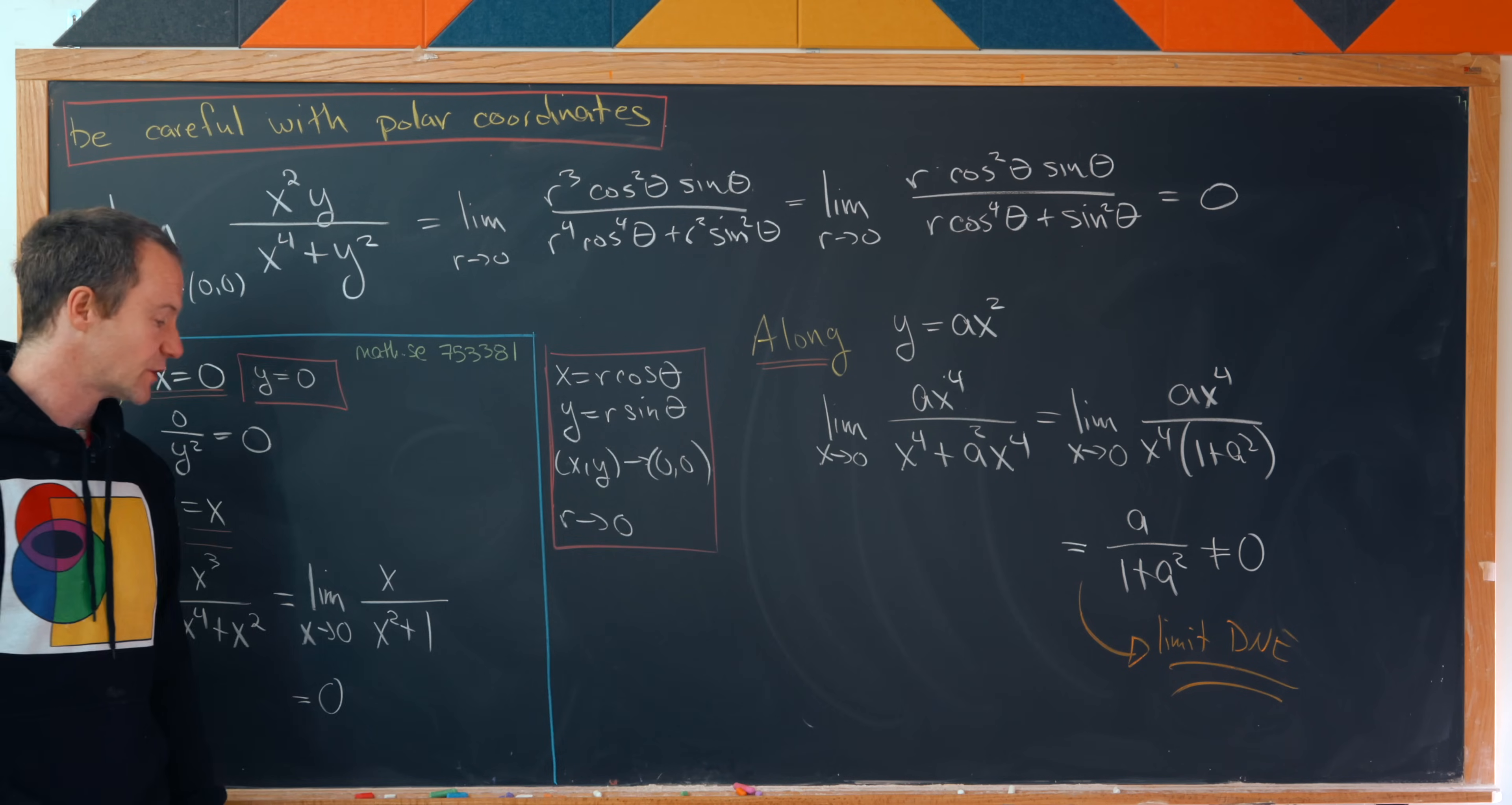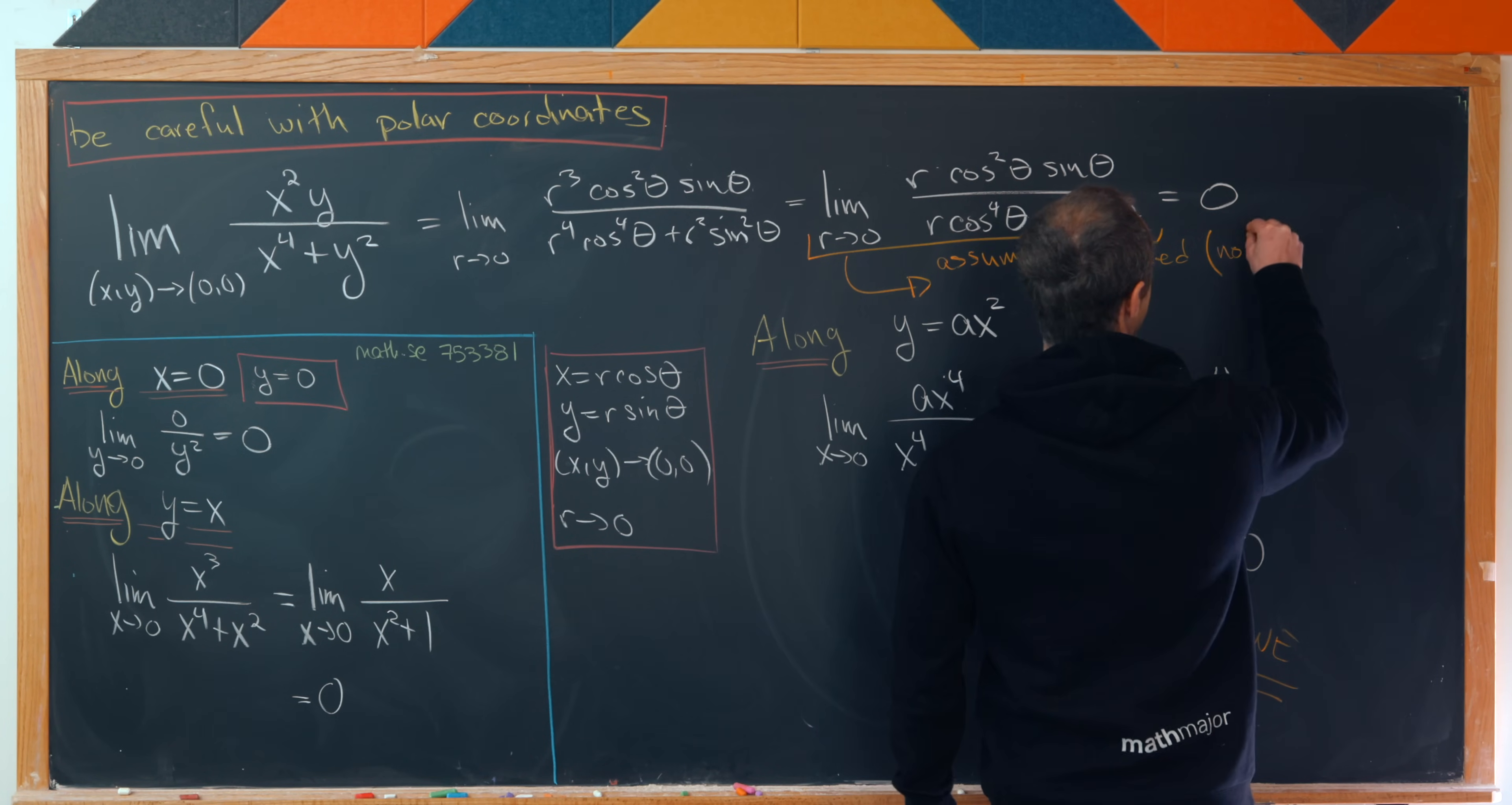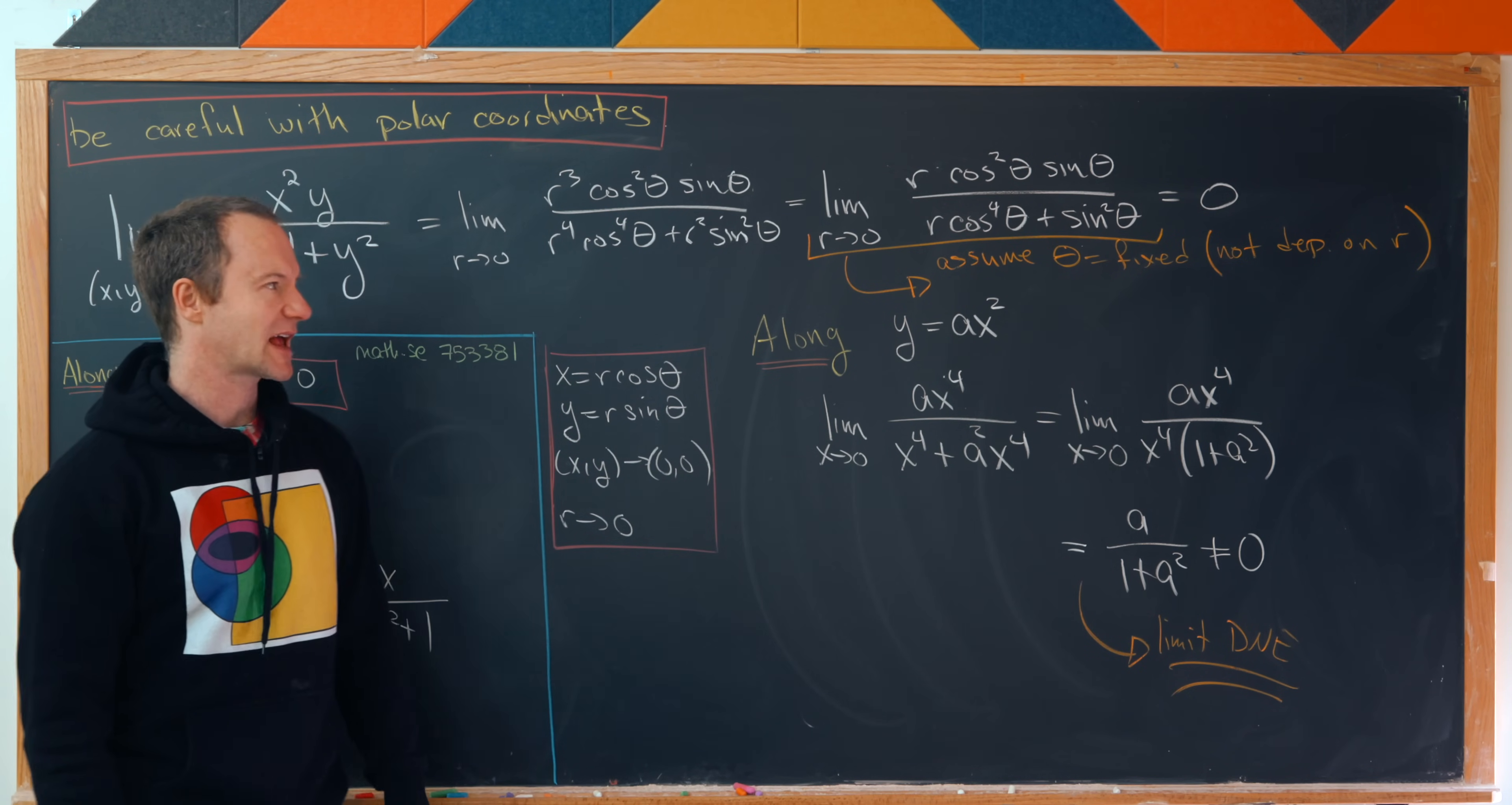So what gives here? So it turns out what happened is that this polar limit up here is actually dependent on the value of theta. And not only is it dependent on the value of theta, but it assumes that the value of theta is fixed. And what I might mean by fixed is it's not dependent on r. So of course, if it were dependent on r, then we would have to take that into account in order to calculate this limit. And for certain dependences of theta on r, we would see that this limit is not equal to zero, which is exactly what we saw right here.